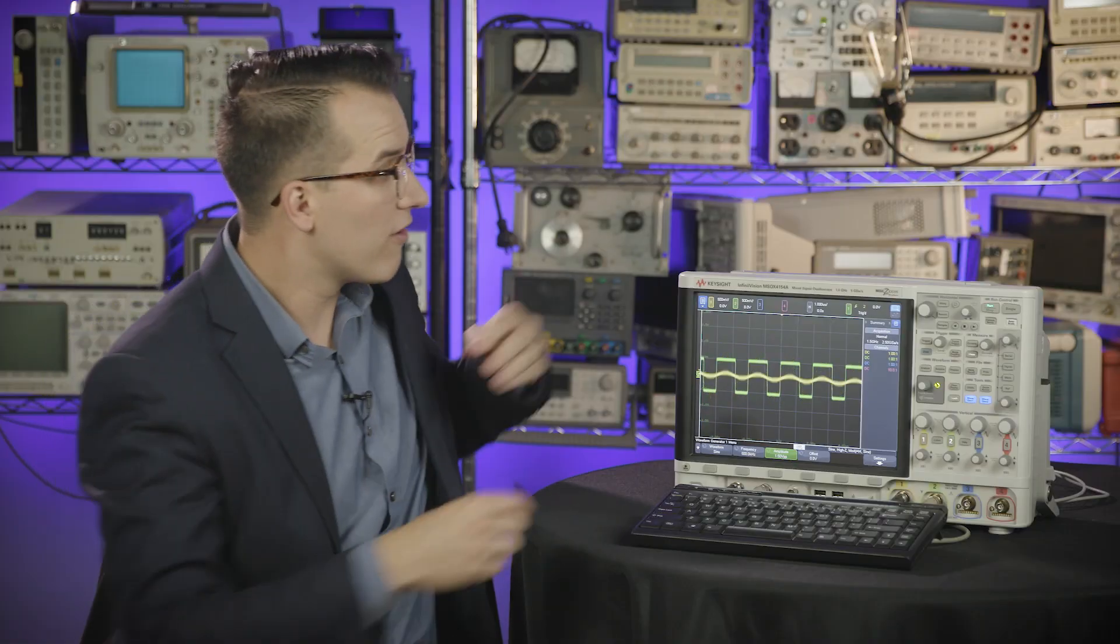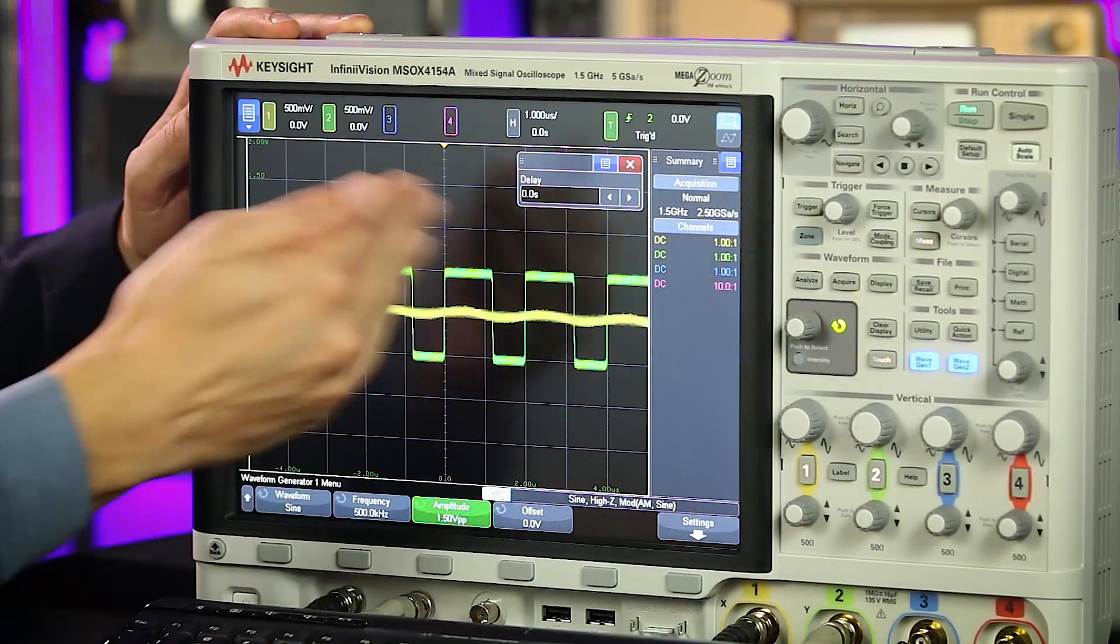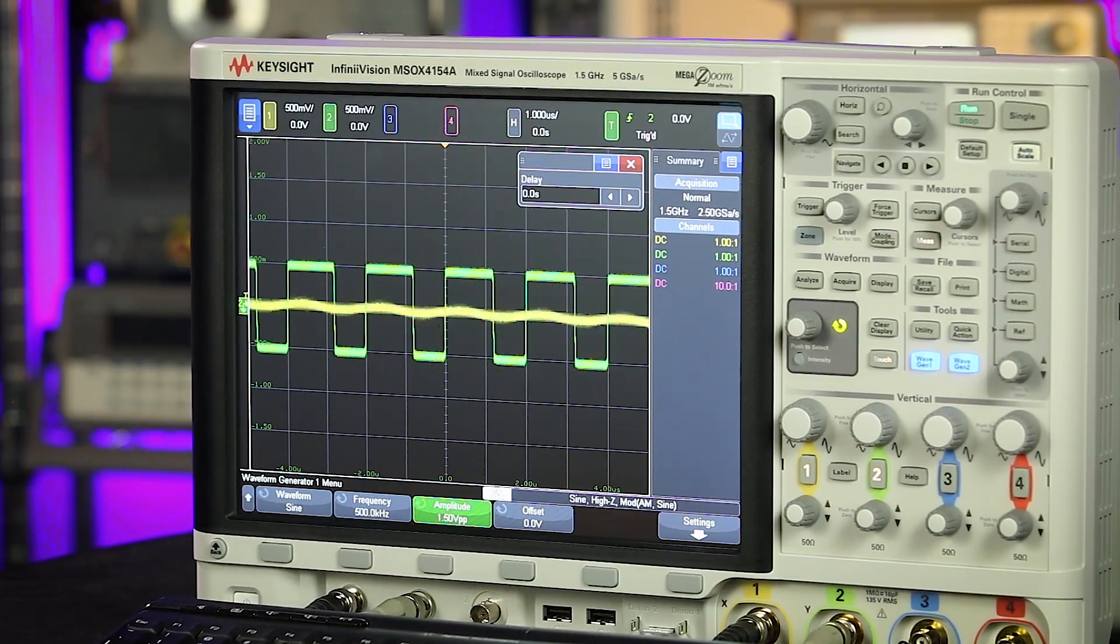Same for channel two, pushing the horizontal offset knob. So if I change my offset, if I push that knob, it's going to center that signal back on screen.